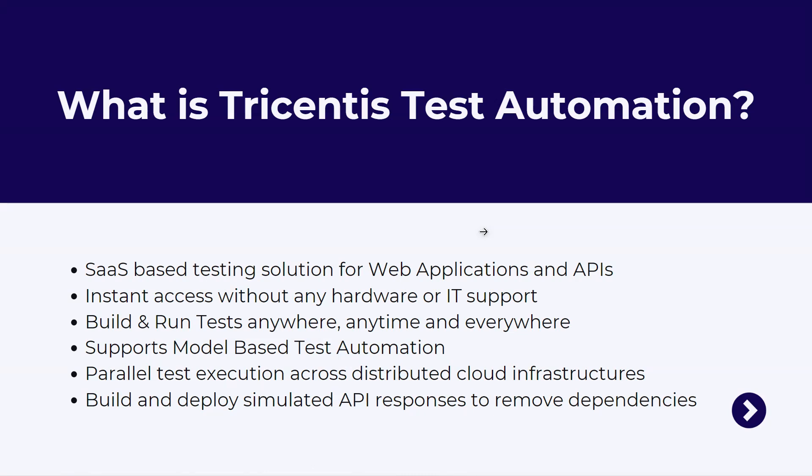Currently TTA can only be used for web applications and API-based applications — it cannot be used for desktop applications. If desktop automation is your primary requirement, you should use Tricentis Tosca, which caters to all application types. The biggest advantage of Tricentis Test Automation is that it provides instant access without any hardware or IT support — you just register at a particular URL and use it to automate web applications and APIs.